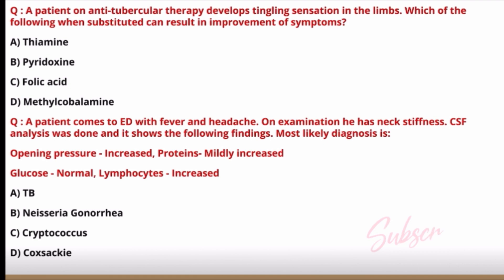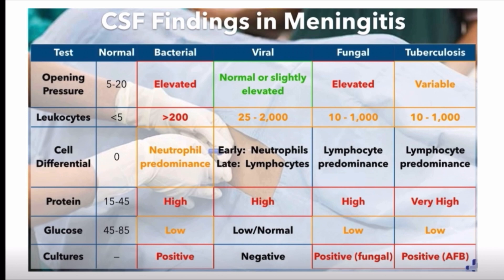A patient presents with fever and headache; on examination he has neck stiffness. CSF analysis shows: increased opening pressure, mildly increased proteins, normal glucose, and increased lymphocytes. Most likely diagnosis — options are tuberculosis, Neisseria gonorrhoeae, Cryptococcus, and Coxsackie. We must know CSF findings in different organisms to answer this.